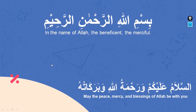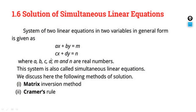Please listen — let's clarify how things work so that whatever is stuck in your mind gets cleared easily. In this exercise, the solution of simultaneous linear equations is explained. The system of two linear equations in two variables in general form is given as: ax + by = m, cx + dy = n. This is a general form where the constant values are moved to the other side.